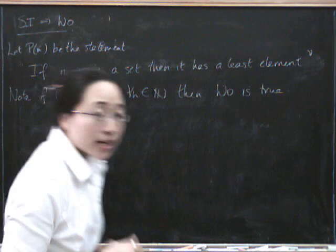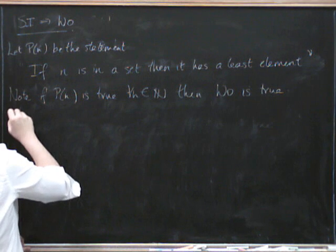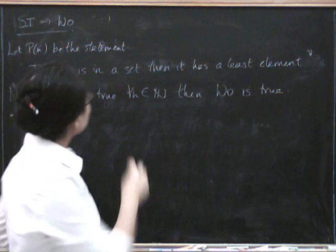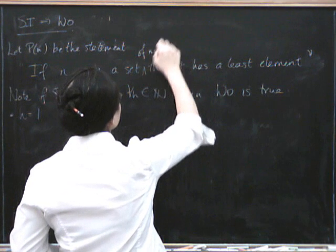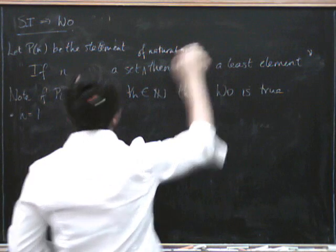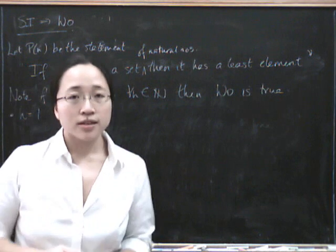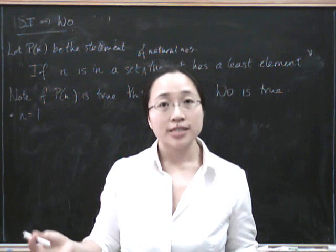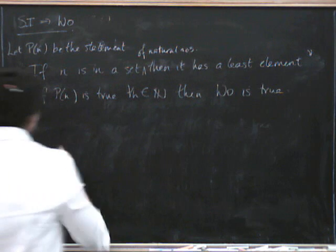Let's first check the case N equals 1. Well, certainly S should be a set of natural numbers. If 1 is in a set of natural numbers, then it has a least element. The least element has to be 1, because 1 is the smallest natural number.